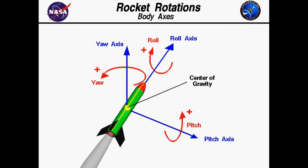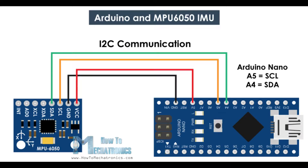The MPU-6050 uses I2C communication, so there are two lines: the clock line and the data line — SCL and SDA. The SDA of the MPU-6050 is connected to the SDA of the Arduino, and the SCL of the MPU-6050 is connected to the SCL of the Arduino.